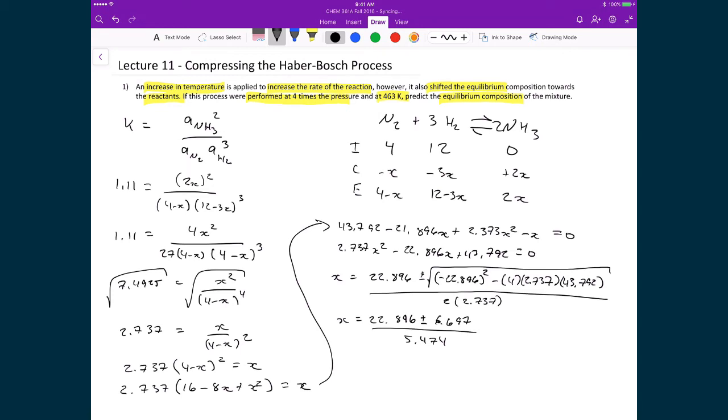And so when I solve for the plus minus and I solve for x, what that gives me is an x that's equal to 2.96 or 5.406.